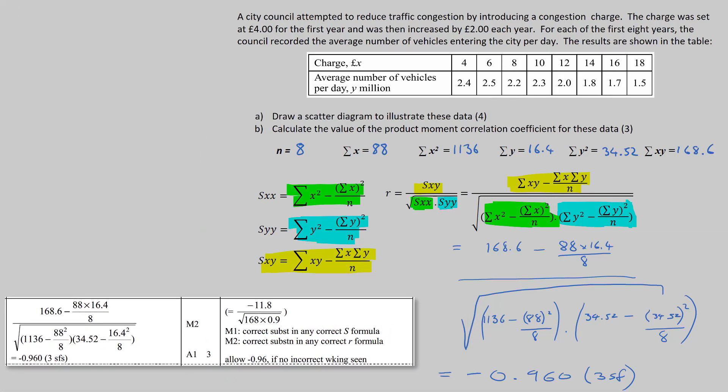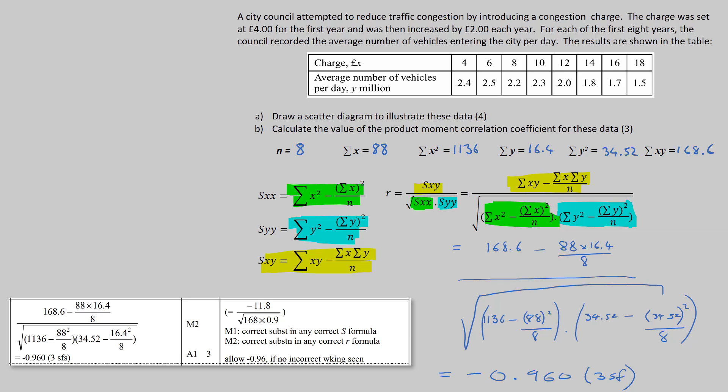Now, the mark scheme states two method marks and one accuracy mark for this question. You get the first method mark for a correct substitution into any s formula, and a second for a correct substitution into the r formula. Now, we've done both at the same time.